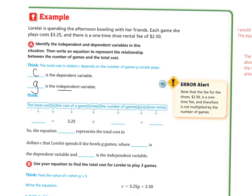So the independent variable is going to be the games, and the dependent variable is going to be the total cost, because the cost depends on how many games she plays.